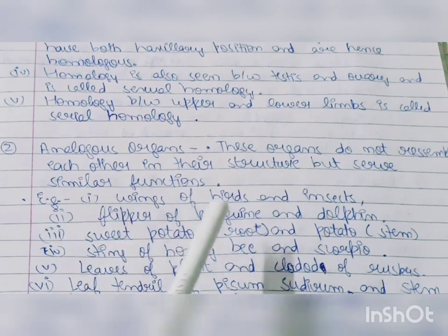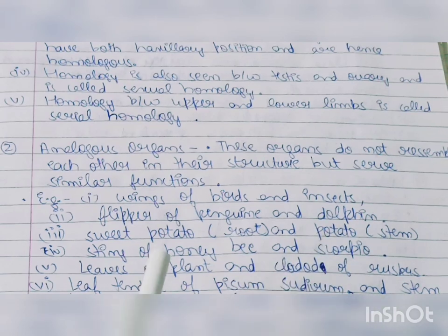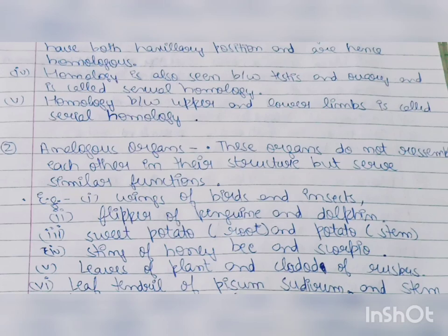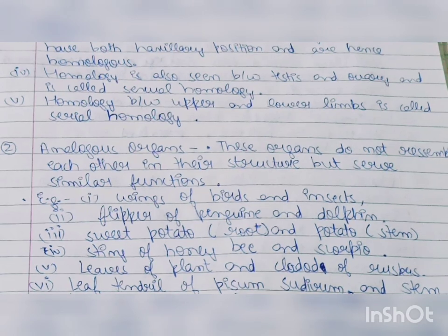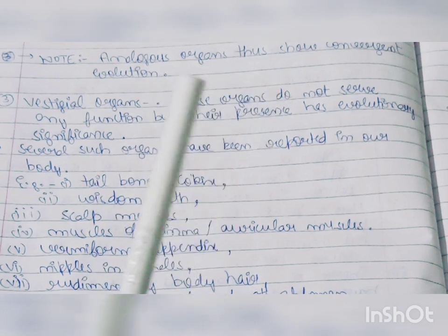For example: wings of birds and insects; flipper of penguin and dolphin; sweet potato root and potato; sting of honeybee and scorpion; leaves of a plant and cladodes of Ruscus; leaf tendril of Pisum sativum and stem tendril of Passiflora. These are examples of analogous organs, which perform the same functions but their structures do not resemble each other. Note: analogous organs show convergent evolution.